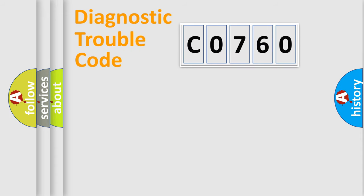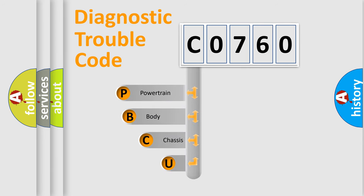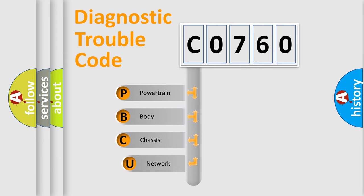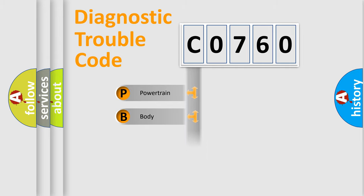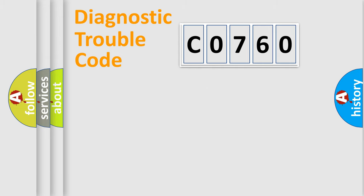First, let's look at the history of diagnostic fault code composition according to the OBD2 protocol, which is unified for all automakers since 2000. We divide the electric system of an automobile into four basic units: Powertrain, Body, Chassis, and Network.